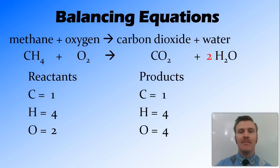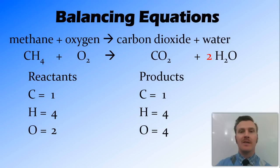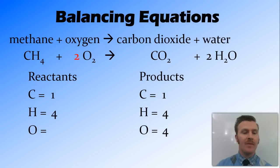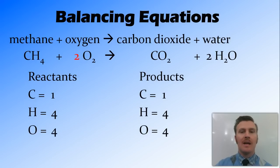We go back to the reactant side and bring in two oxygen molecules instead of just one, since we have four oxygens on the product side but only two on the reactant side. Recounting the reactants: carbon from methane is 1, hydrogen from methane is 4, and oxygen — we have two sets of O2, so that's four oxygen atoms in total. Comparing both sides: reactants have 1 carbon, 4 hydrogen, 4 oxygen; products have 1 carbon, 4 hydrogen, 4 oxygen. The equation is now balanced.